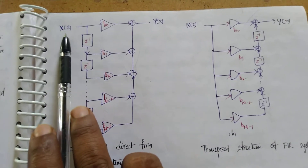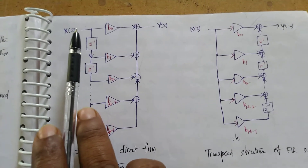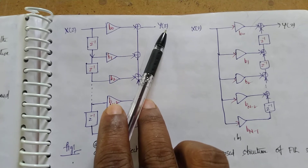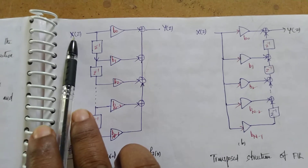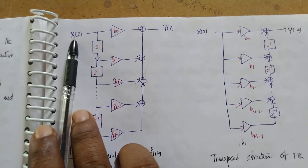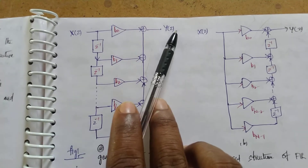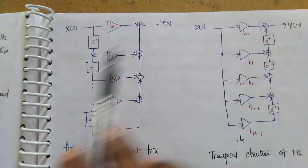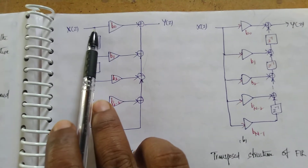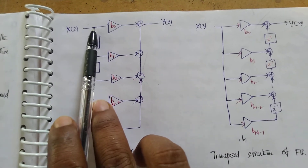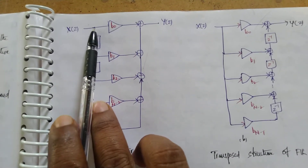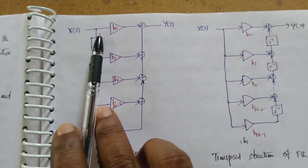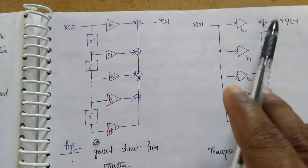First of all, we need to interchange the input and output. So here x(z) is replaced with y(z), and y(z) is replaced with x(z). After that, we need to replace the pickoff point with the adder.